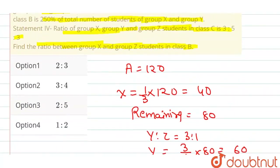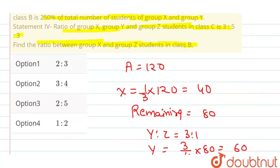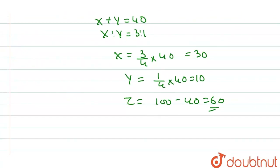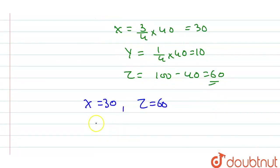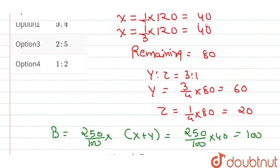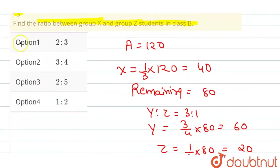हमें क्या बताना था? हमें बताना था ratio of group X and Z। तो ratio of group X and Z कितना हो जाएगा हमारा? X है हमारा 30, Z है हमारा 60। Ratio कितना आएगा? So ratio equals to 30:60, that is 1:2। यह हमारा answer होगा।